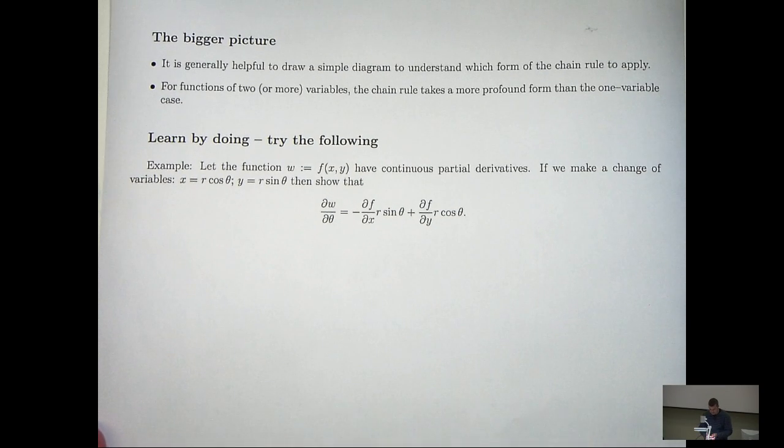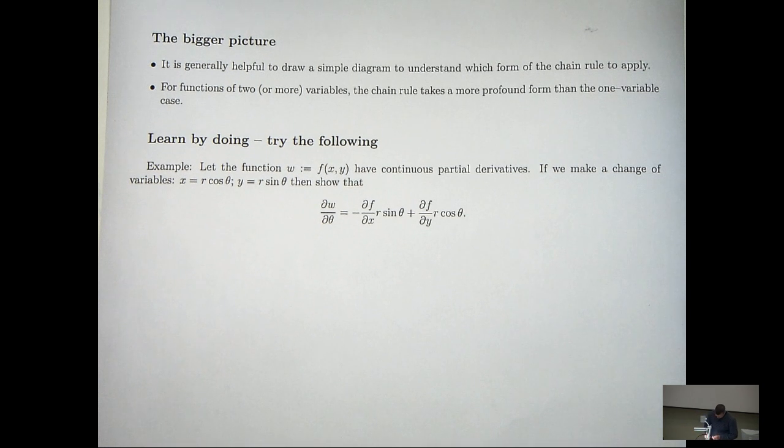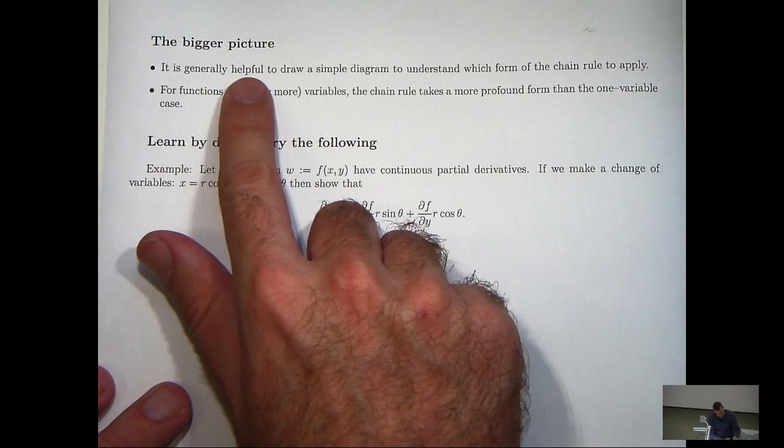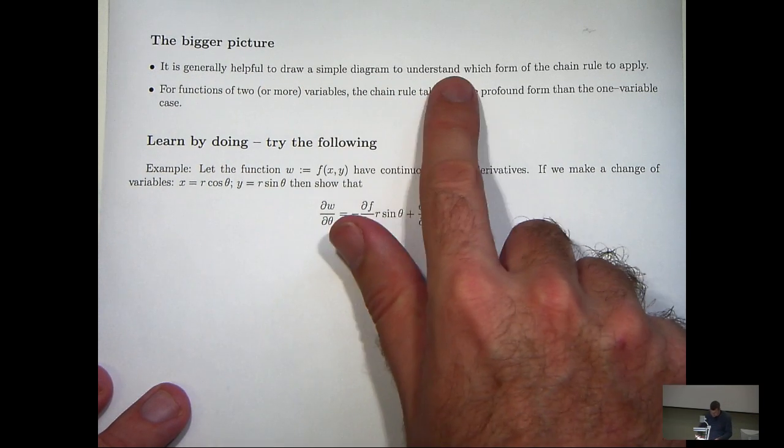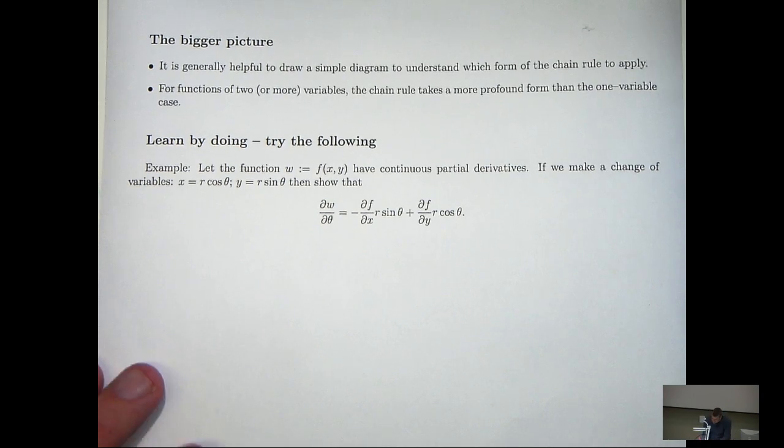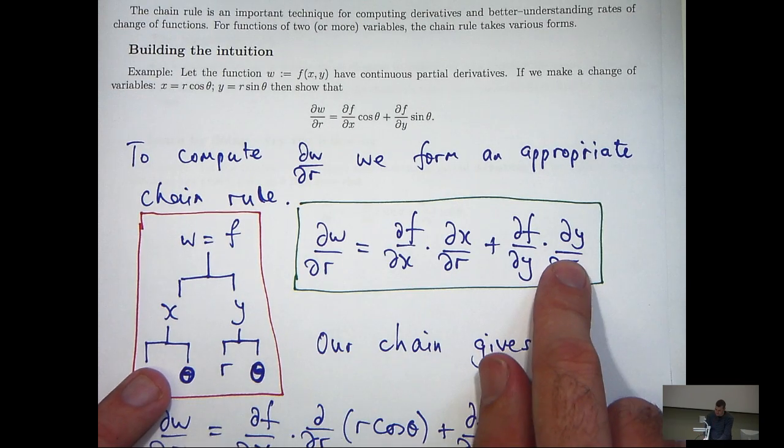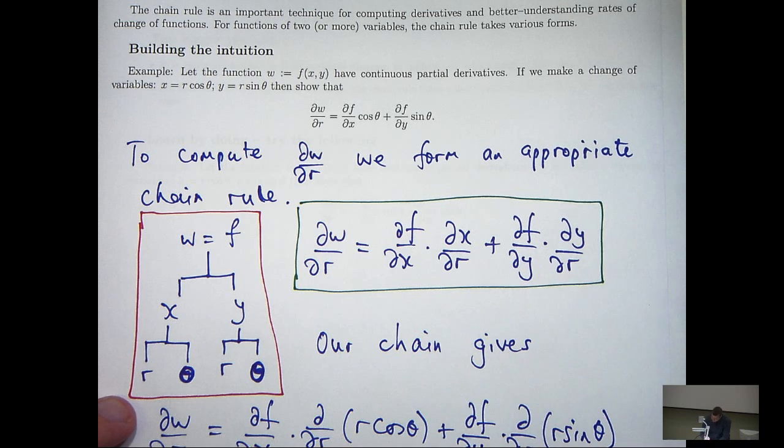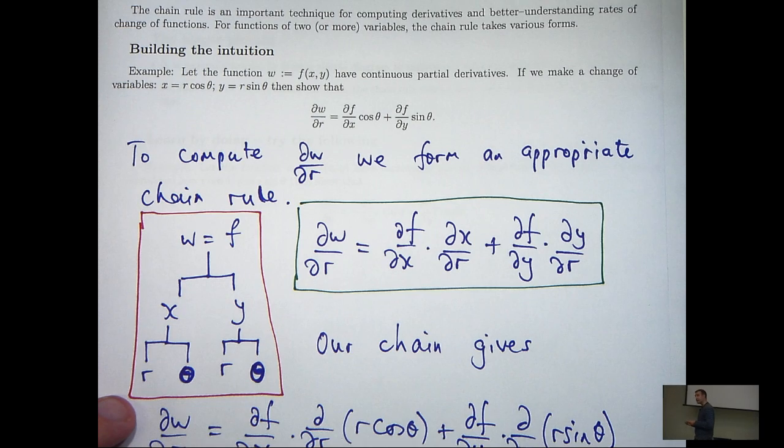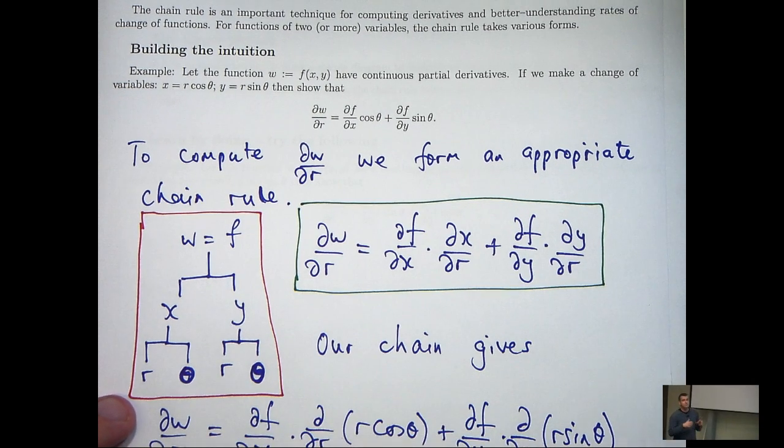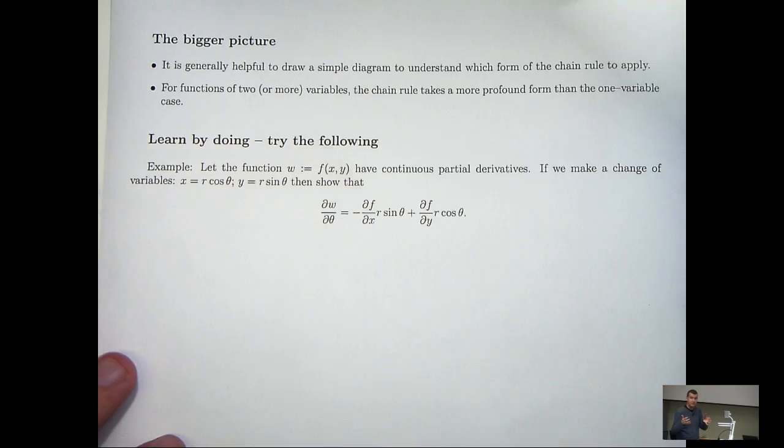Let's talk a little bit about the bigger picture. What are some techniques that you can use for all sorts of problems? Well, at least in my opinion, it's generally helpful to draw a simple diagram to understand which form of the chain rule to apply. You may look at this chain rule here and think, I can remember that. Well, if you can, that's great. But when you get to many variables and more complicated cases, it's almost impossible to remember the chain rule. So my advice is to draw a simple diagram.